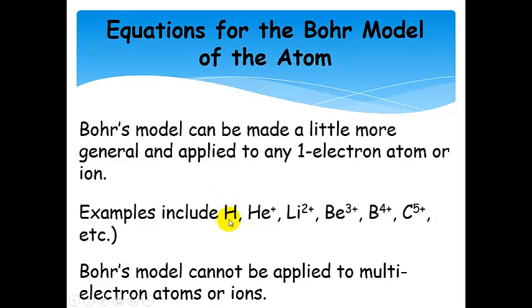So for instance, the only one electron atom is, of course, hydrogen. But if we remove an electron from helium, then we have one electron, so in helium plus. Remove two electrons from lithium, and we have lithium two plus, and so on.